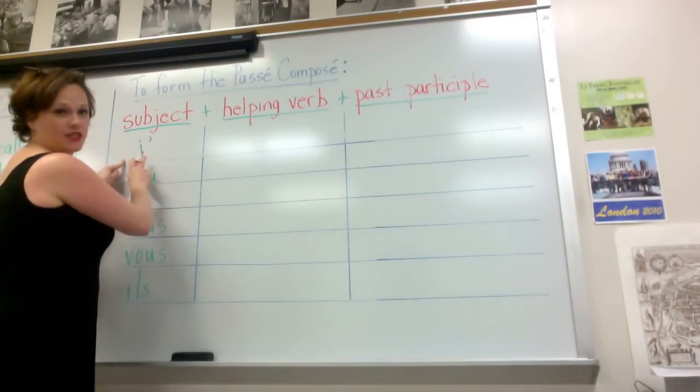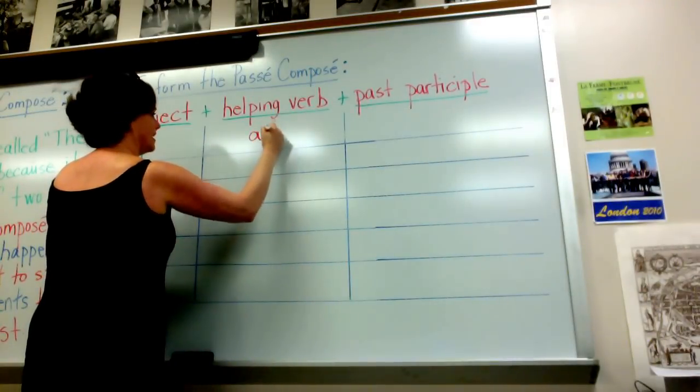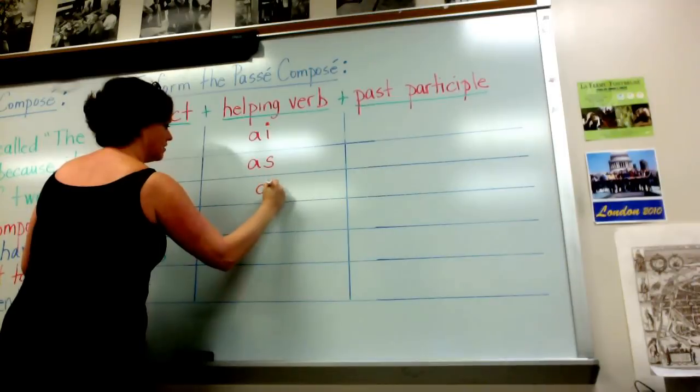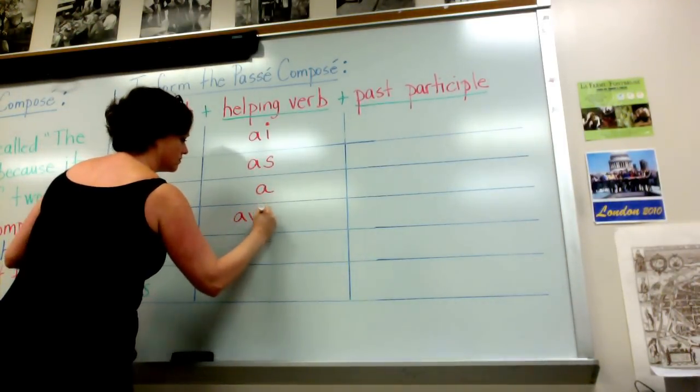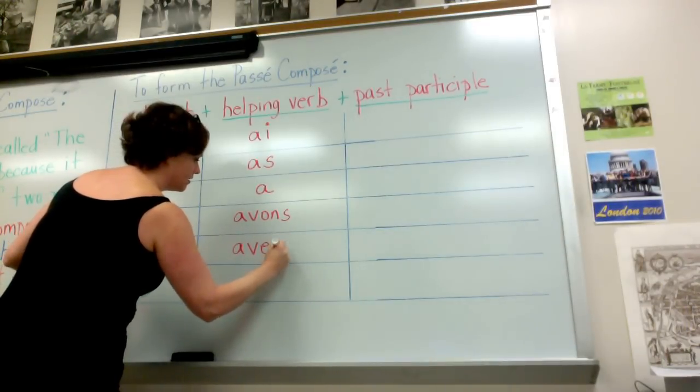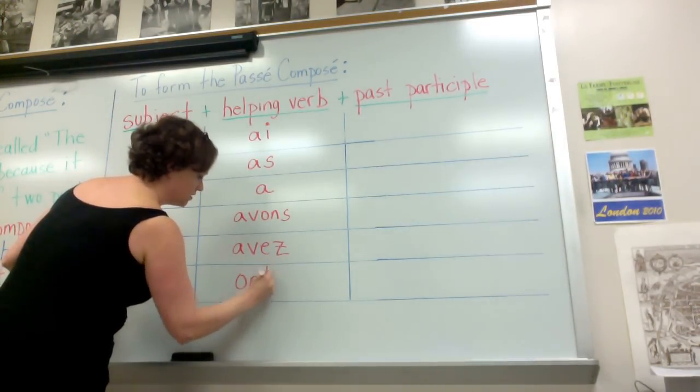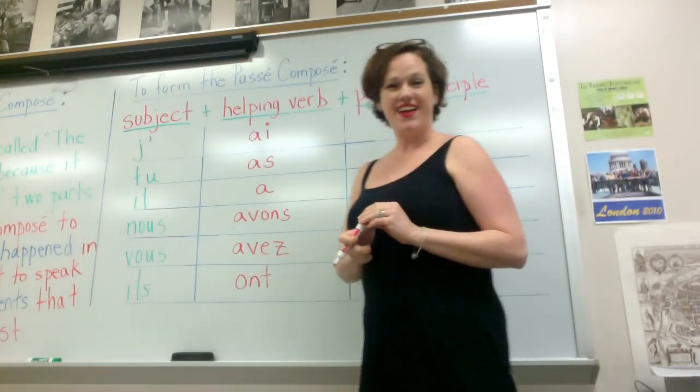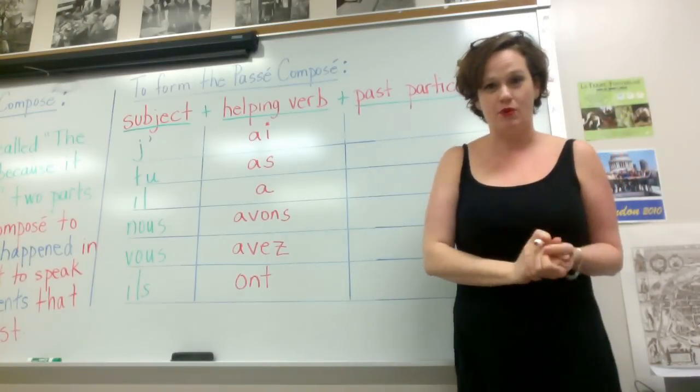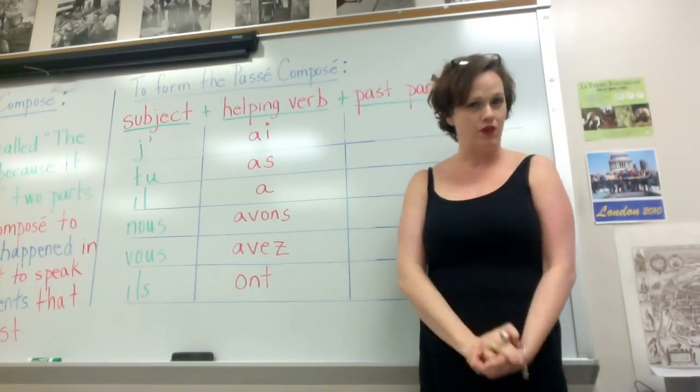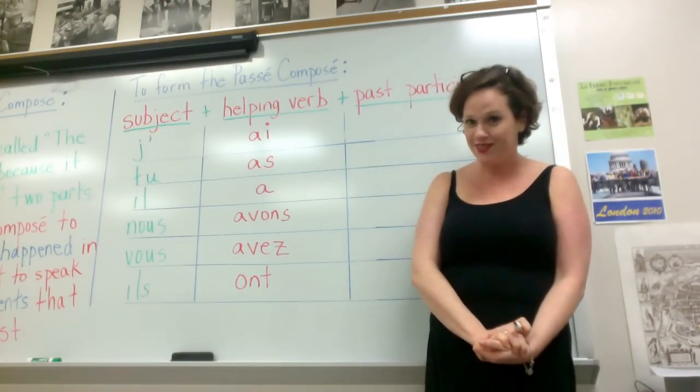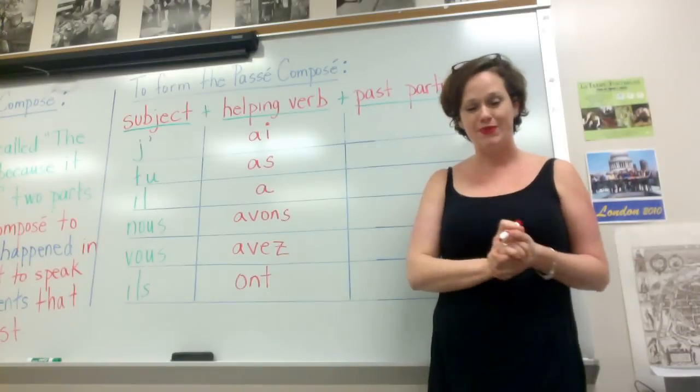So I'll just write that here for you. Here we have the subject pronoun je. So I write j'ai, tu as, il a, nous avons, vous avez, et ils ont. D'accord? Alright, so now we have the subject, we have the helping verb, and what we need now is the past participle.